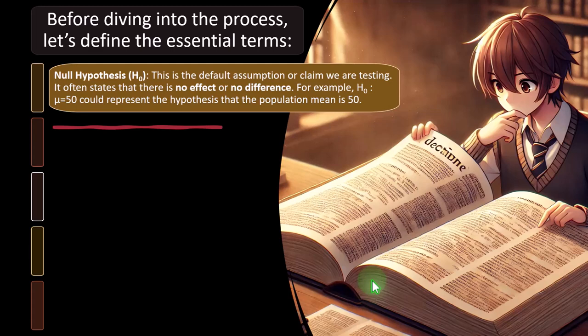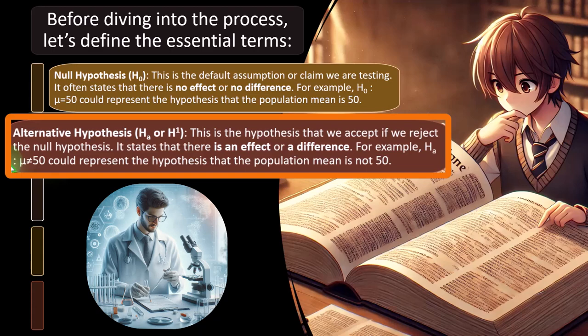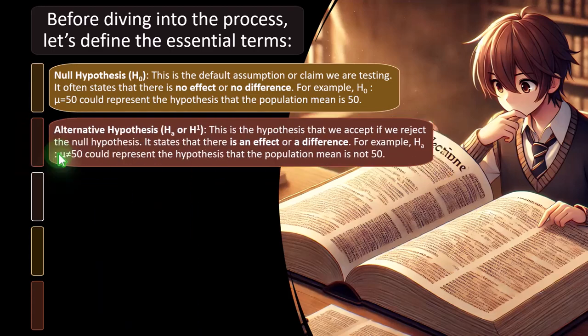The alternative hypothesis, often represented as H-sub-a or H₁, is the hypothesis that we accept if we reject the null hypothesis. In other words, similar to innocent until proven guilty, the null hypothesis might be that regional heights are the same as national heights. If we find enough information to reject the null, the alternative hypothesis would be that the heights are different — or in a one-tail test, that heights are greater. For example, H-sub-a: mu does not equal 50, meaning the population mean is not 50.